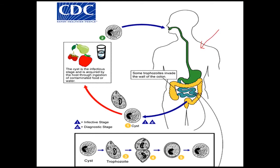If an infected human passes feces outside the body, we can find trophozoites as well as cysts in that feces. If this feces containing cysts contaminates food, and we eat that food, we can get the disease. The cyst is the infective stage. When trophozoites are exposed to the outer environment, they cannot survive for long and are destroyed.